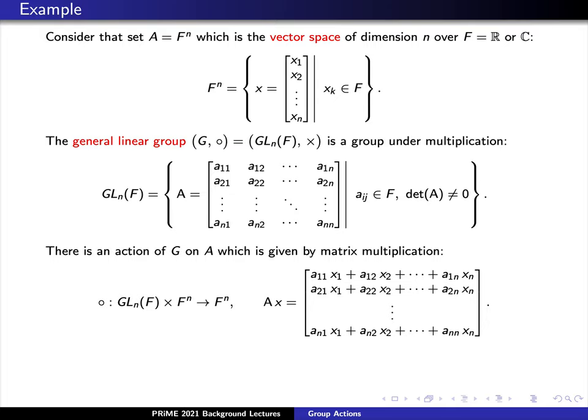There is an action of our group G, recall GL_n, on the set A, called the n-dimensional vector space. Here, it's just given by left multiplication by matrices. That is, if we're given an invertible matrix capital A and a vector x, then the action here is just multiplying the matrix A by the vector x. Recall that if we multiply an n-by-n matrix A by an n-dimensional vector x, we will return an n-dimensional vector A times x.